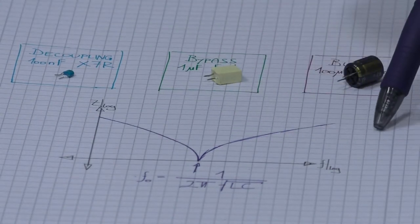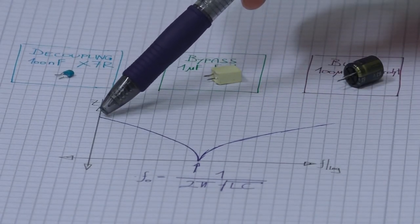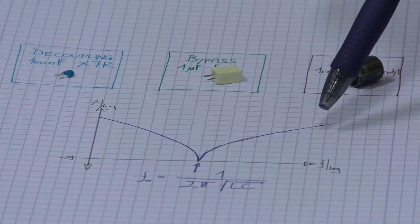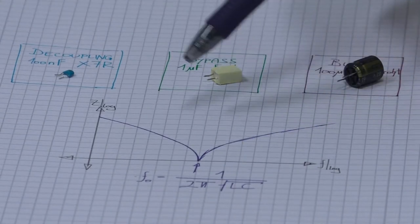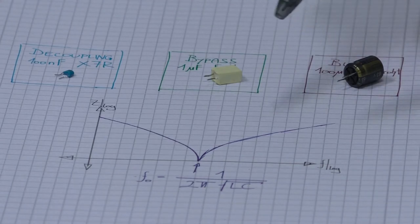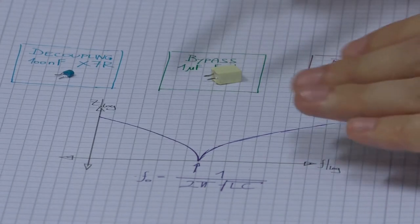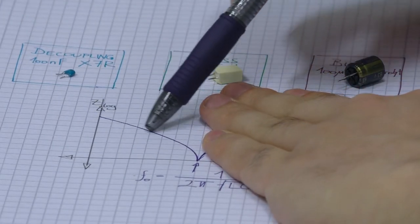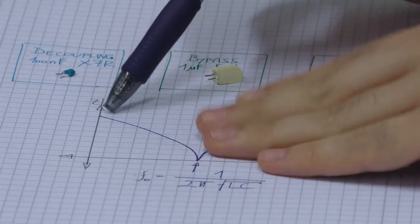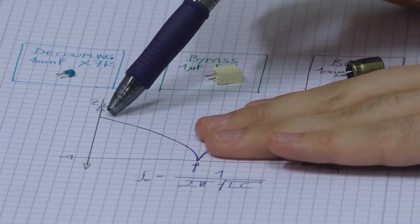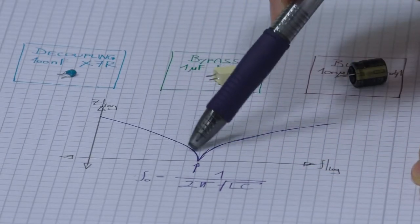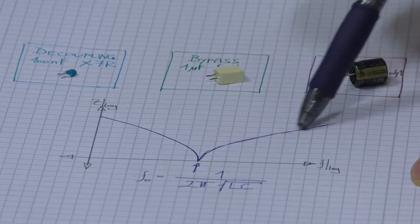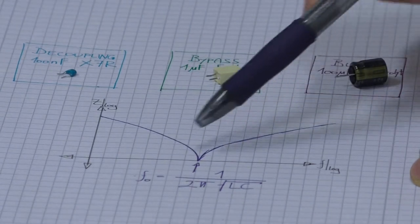And here on the bottom I have plotted a typical impedance curvature of a capacitor. So in an ideal case a capacitor is just described by 1 over j omega c. And so this is this part here. So a decrease of impedance over the frequency. But as you will get an inductor for free after a specific resonance frequency a capacitor acts as an inductor. So it acts like j omega l.